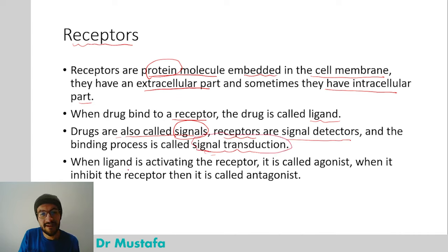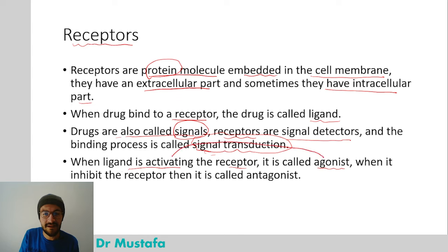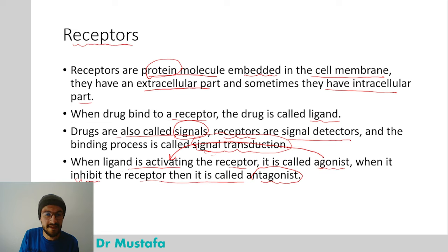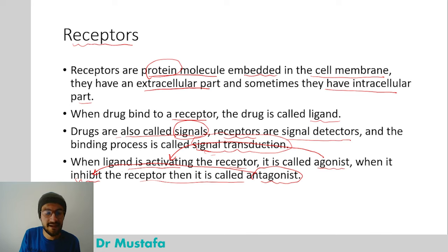When a ligand activates the receptor, it is called an agonist — the agonist activates the receptor. When it inhibits the receptor, it is called an antagonist. These must be memorized: agonist activates, antagonist inhibits or deactivates.